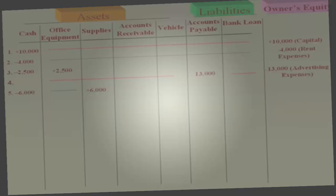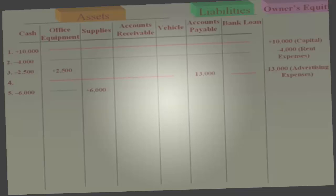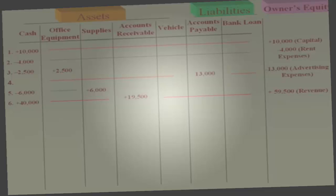Transaction 6 is the most complex. You provided $59,500 worth of service. Revenue goes up $59,500. You collected $40,000 cash, so cash is plus $40,000. The other $19,500 the customer owes you, so accounts receivable is plus $19,500. Revenue is good for equity, so under owner's equity it's plus $59,500.